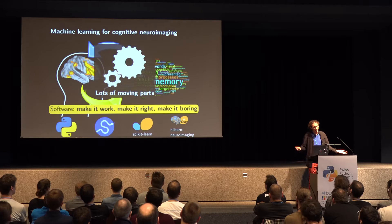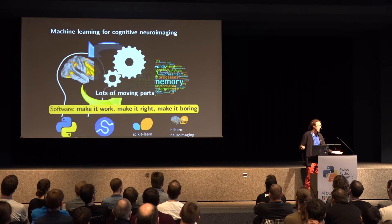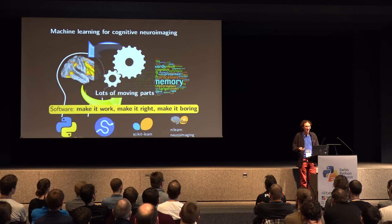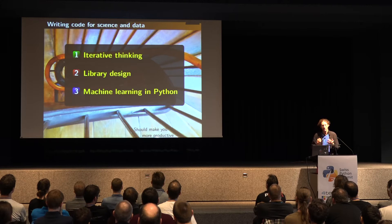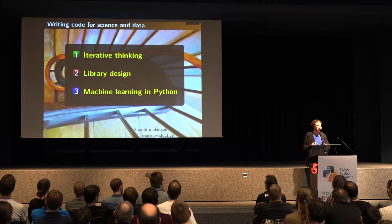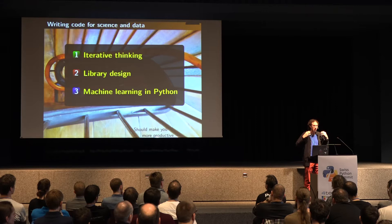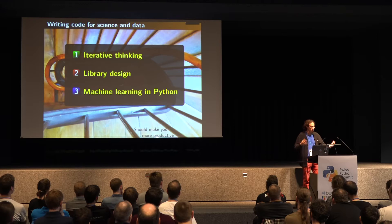I'd like to talk about how we in science or data science work in a very iterative way, which is great because it allows us to push our thinking forward, but also dangerous because we can create a horrible mess of code.